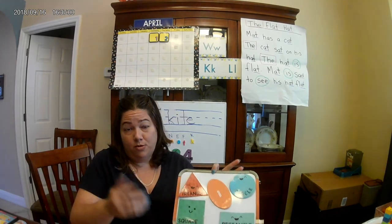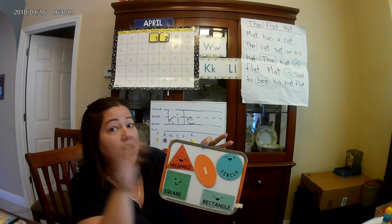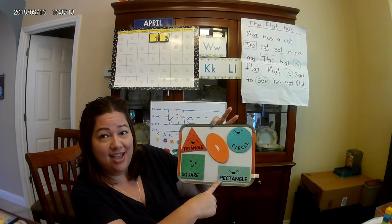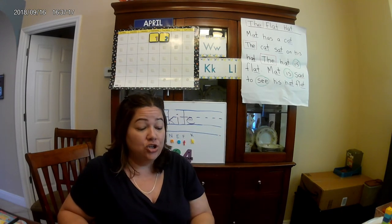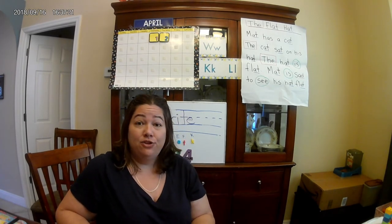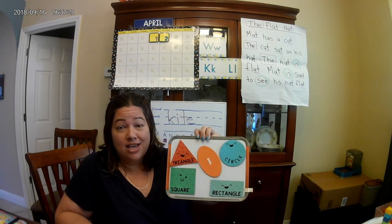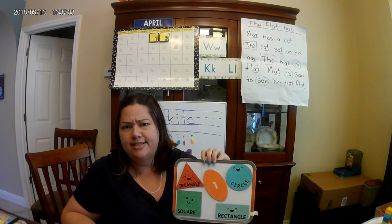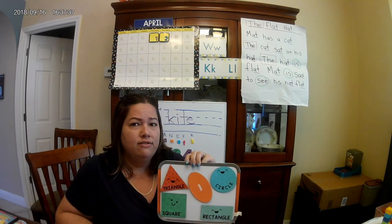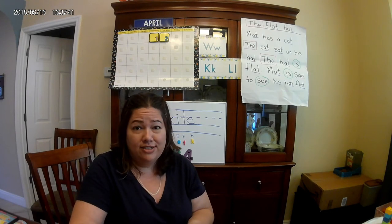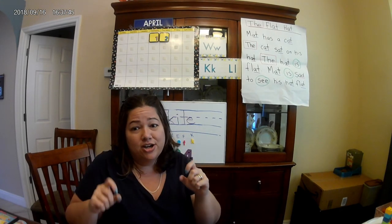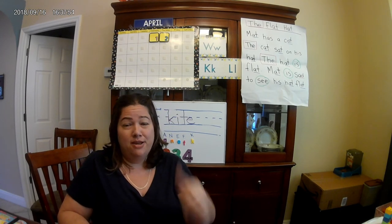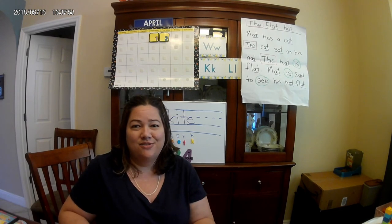So those are our shapes — let's go over them one more time: triangle, oval, circle, square, rectangle. My challenge to you today is to go around and do a scavenger hunt game, and see if you can find some shapes around your house. You can take a picture, draw it, whatever you like — make it a little fun game, like you're a shape detective. I would love to see your pictures in the comments section down below. If you like this video, make sure you give it a good thumbs up, and I will see you in our next video. See you tomorrow! Bye!